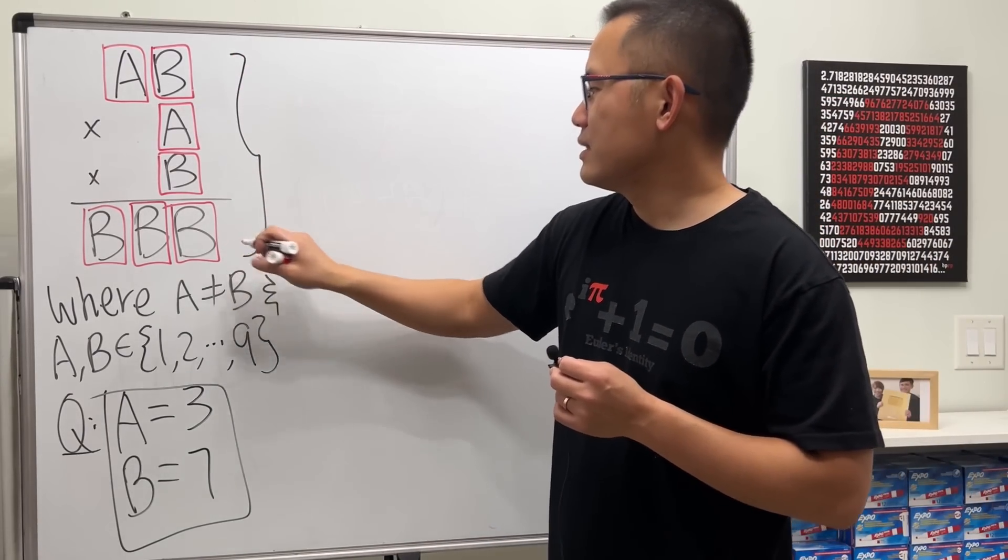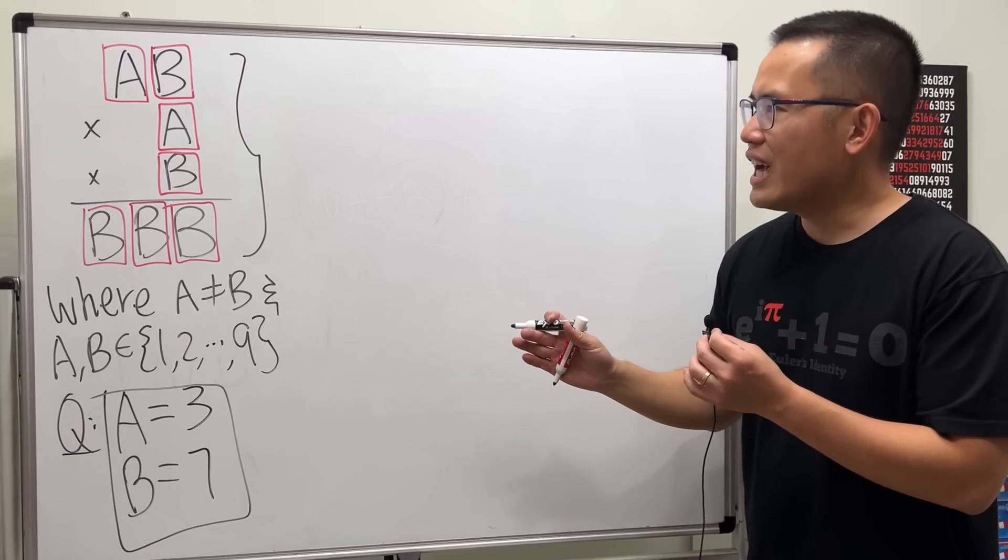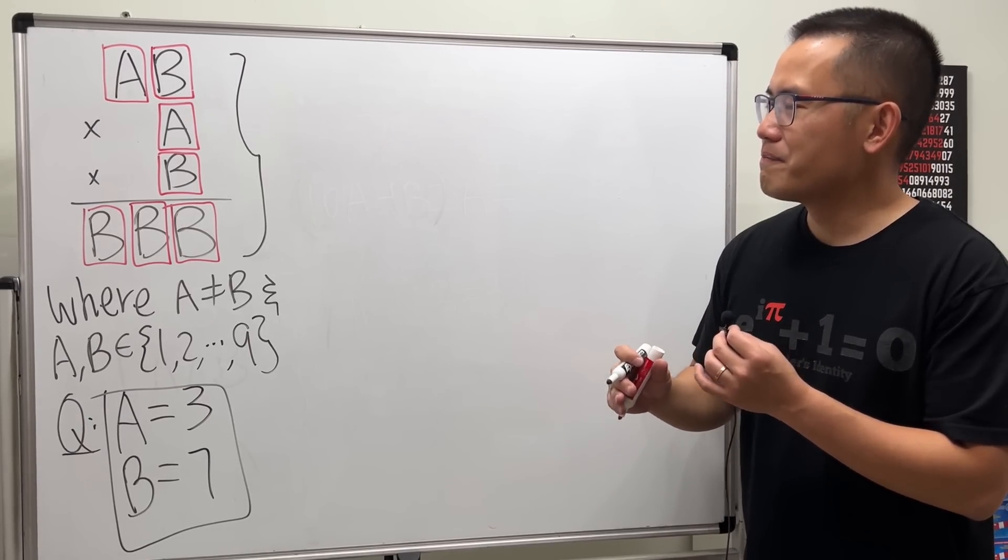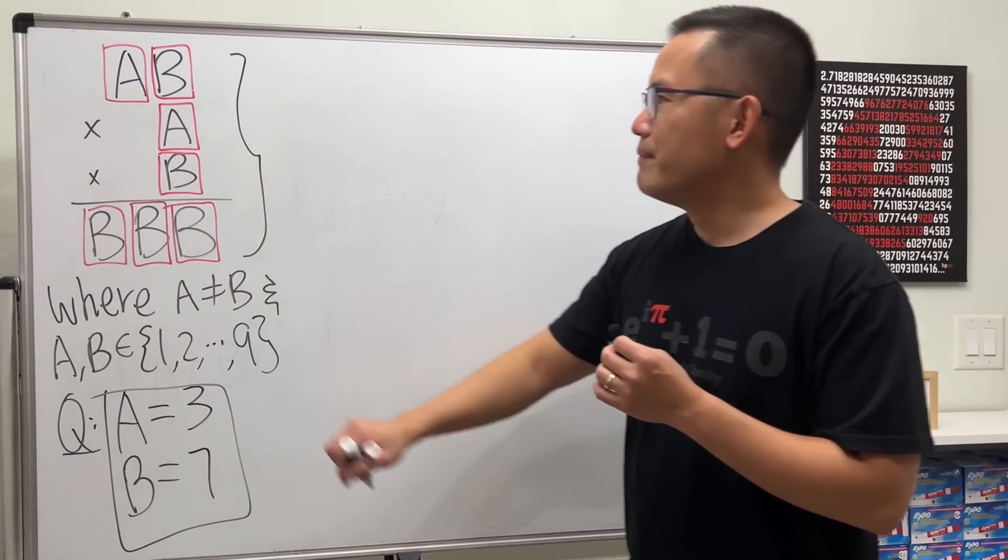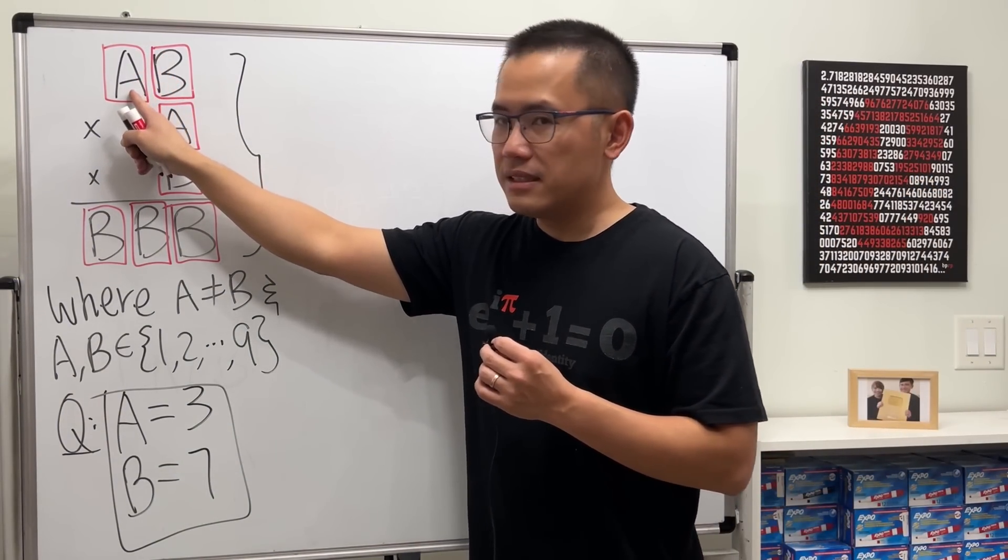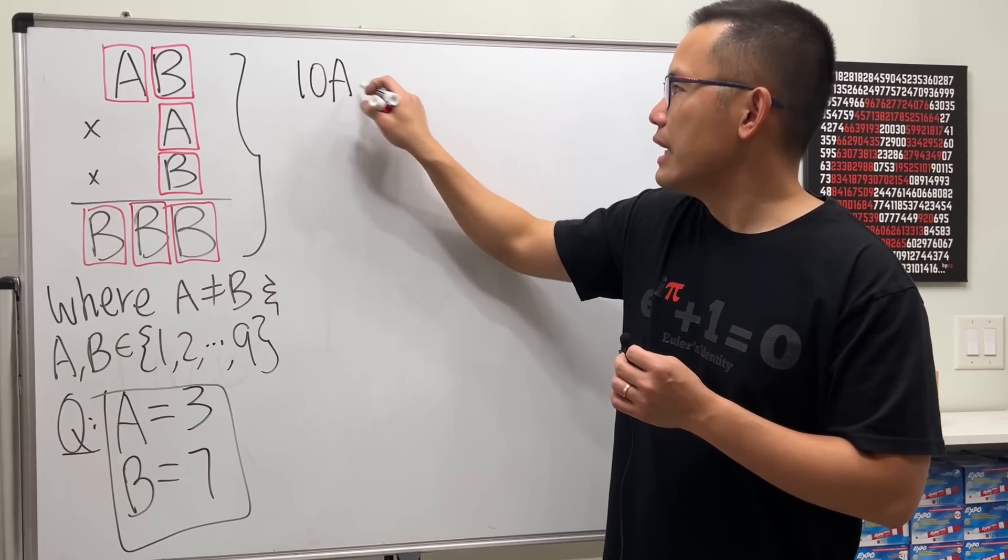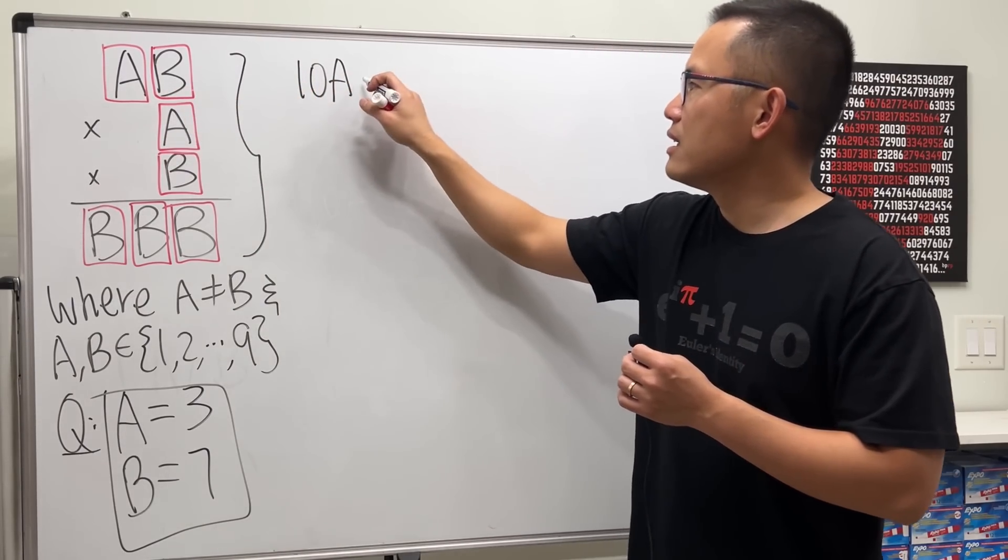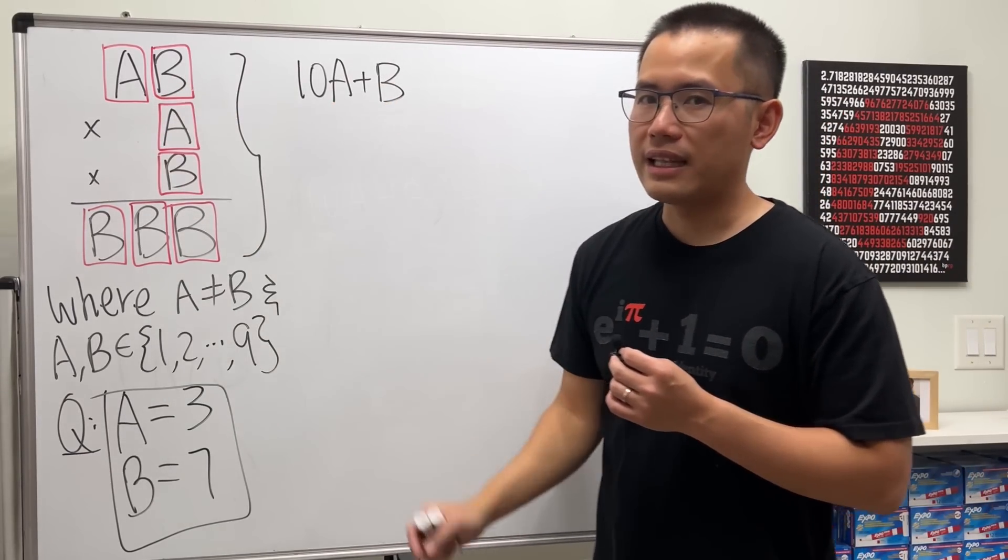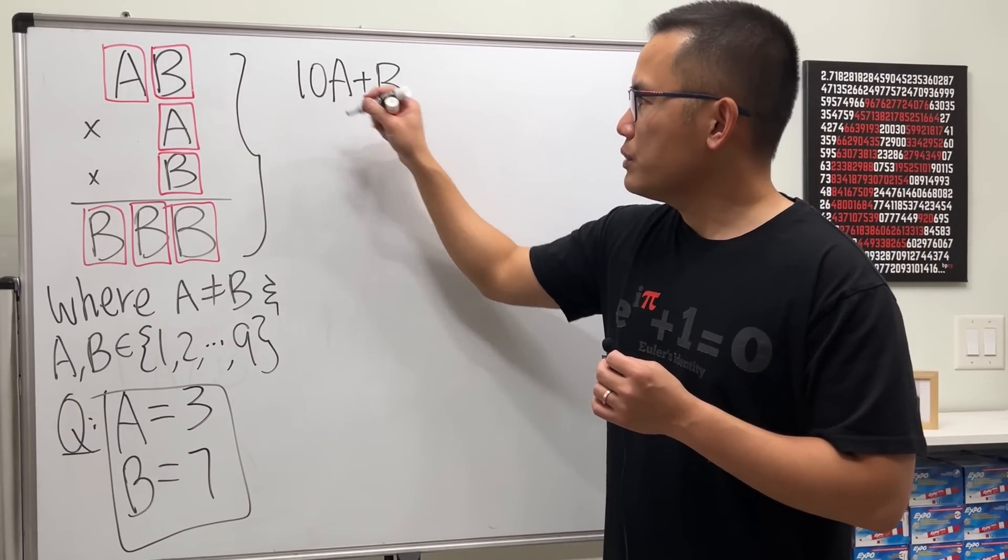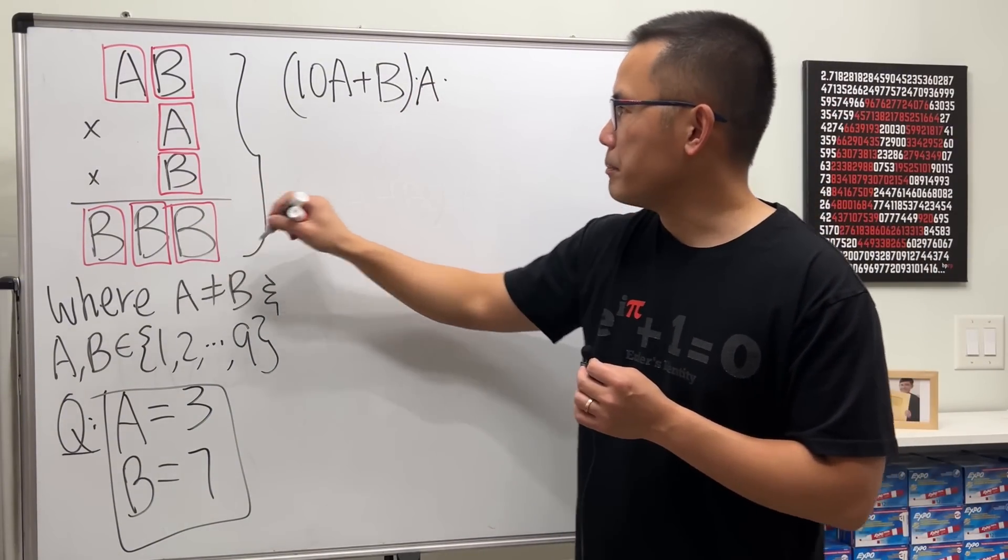I like this one a lot because we can still use algebra to figure it out. We don't have to guess and check or talk about different possibilities. So firstly, when we have a two-digit number AB, A is in the tenth place so this is really 10 times A, and then we add the unit digit B to it. So that will give us AB like that.